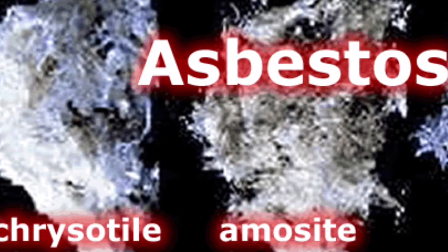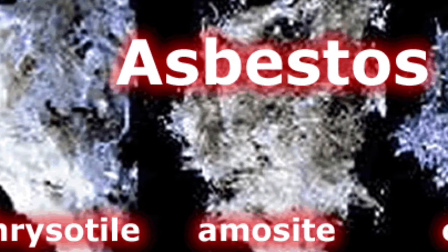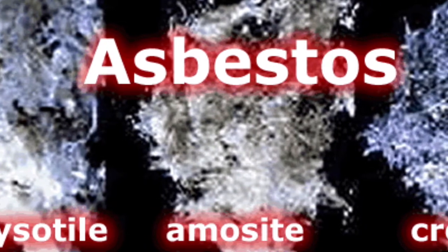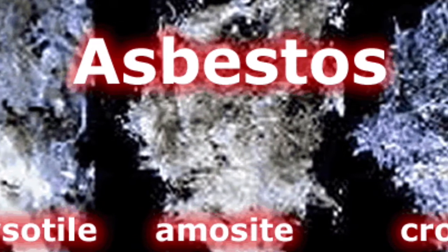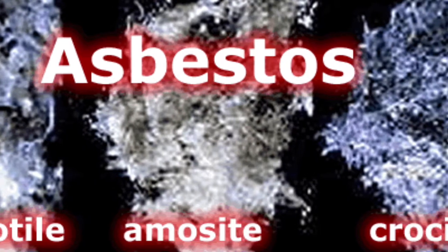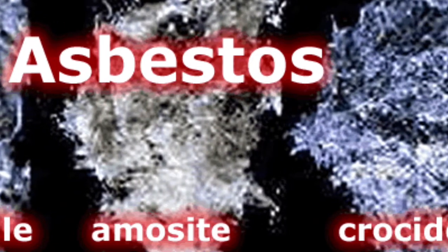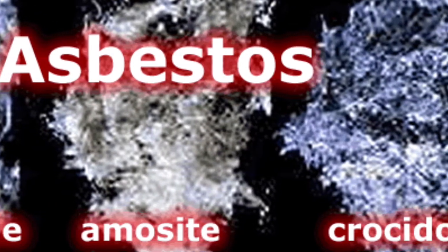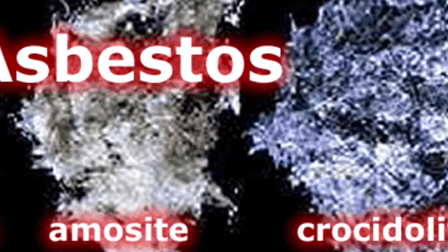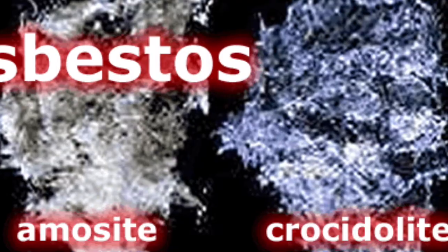Asbestos is a set of six naturally occurring silicate materials, which all have in common their thin fibrous crystals, with each visible fiber composed of millions of microscopic fibrils that can be released by abrasion and other processes. They are commonly known by their colors as blue asbestos, brown asbestos, white asbestos, and green asbestos.